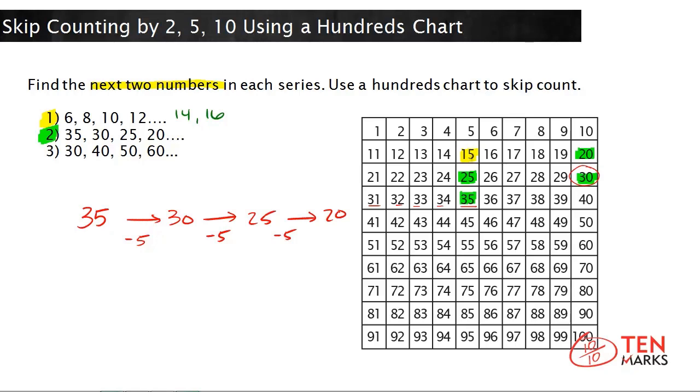Now from here, do the same thing again. Count 1, 2, 3, 4, 5, lands us on 10. Which means the next number in the series will be 10. So the one after 20 is 15 and then you take away 5 again and you get to 10. So this is skip counting backwards by 5s.